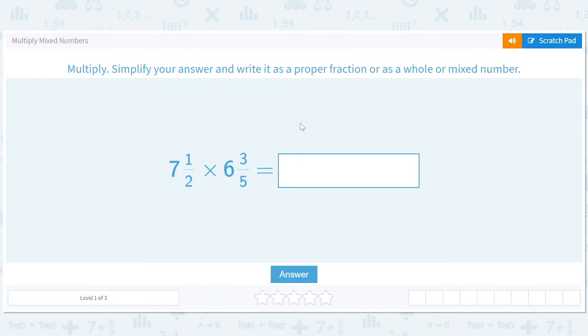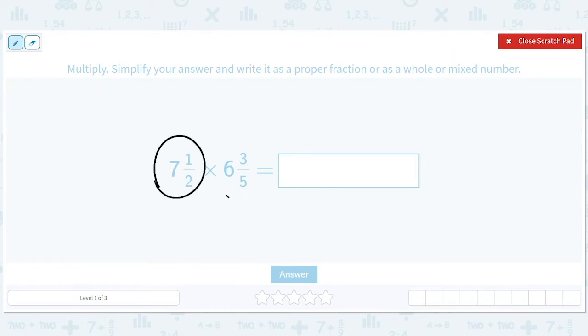Multiplying mixed numbers. Let's multiply these mixed numbers and write our answer as a proper fraction or a whole mixed number as the directions say. So the steps here are that we have to convert to improper fractions, multiply and then simplify.